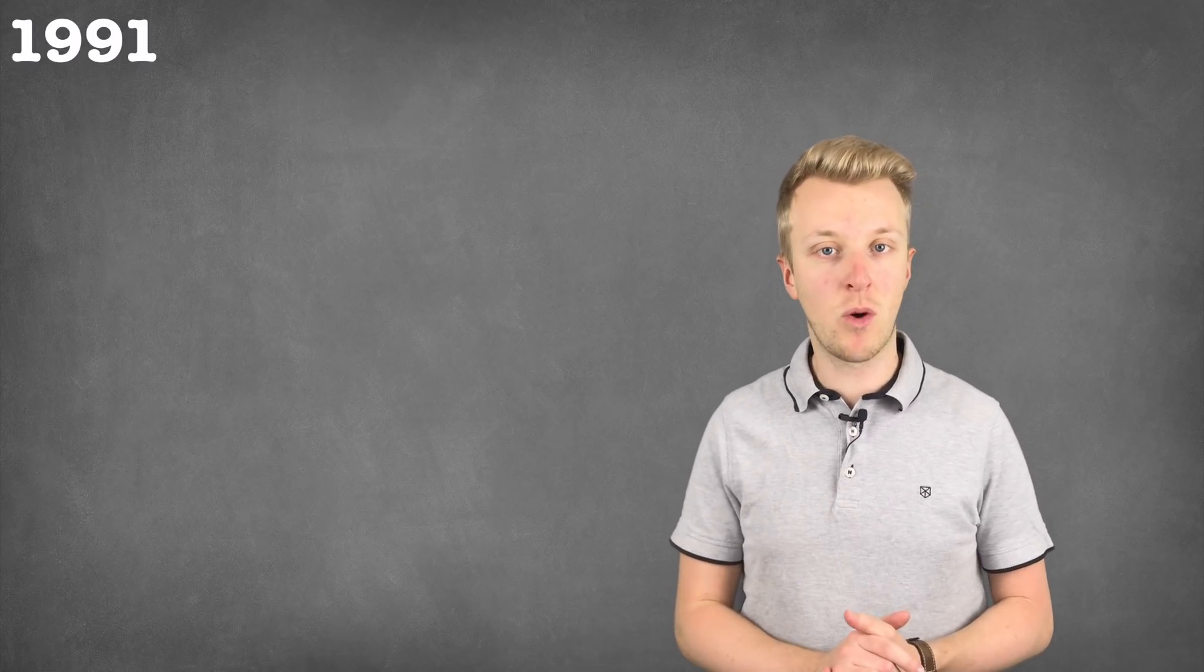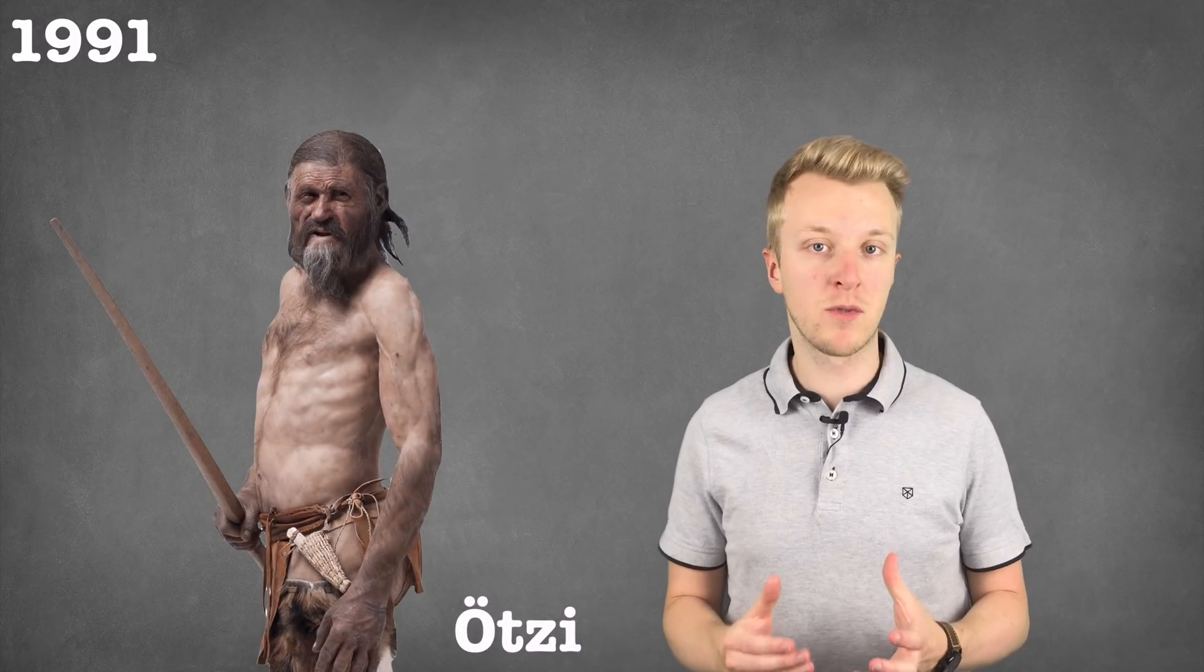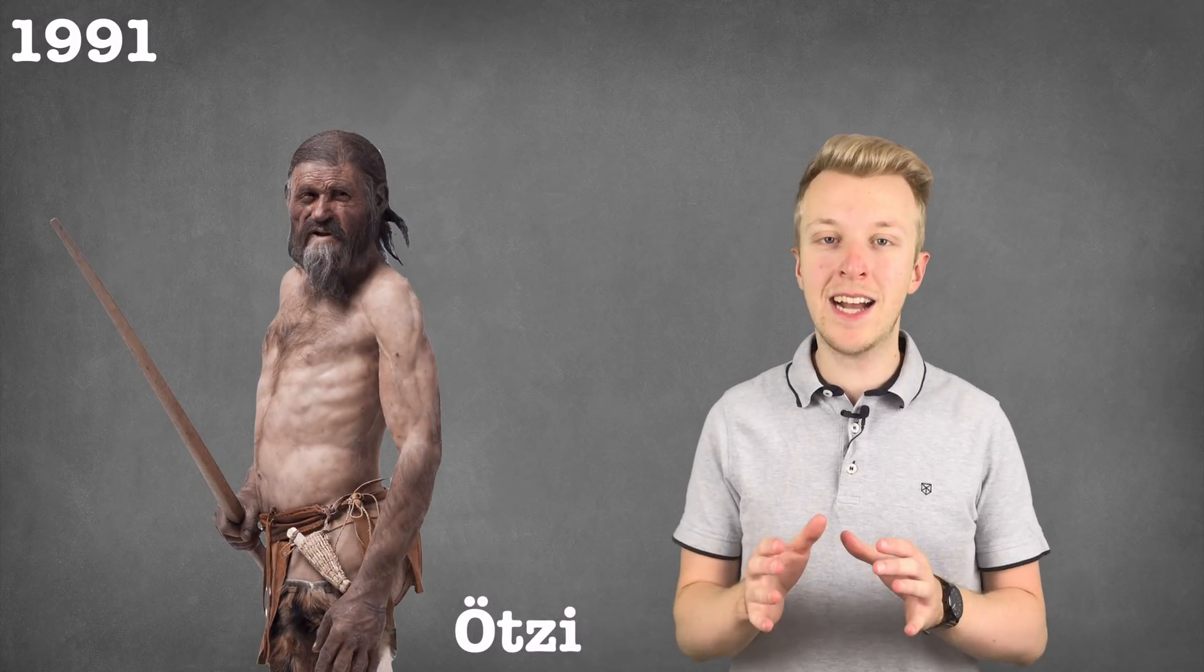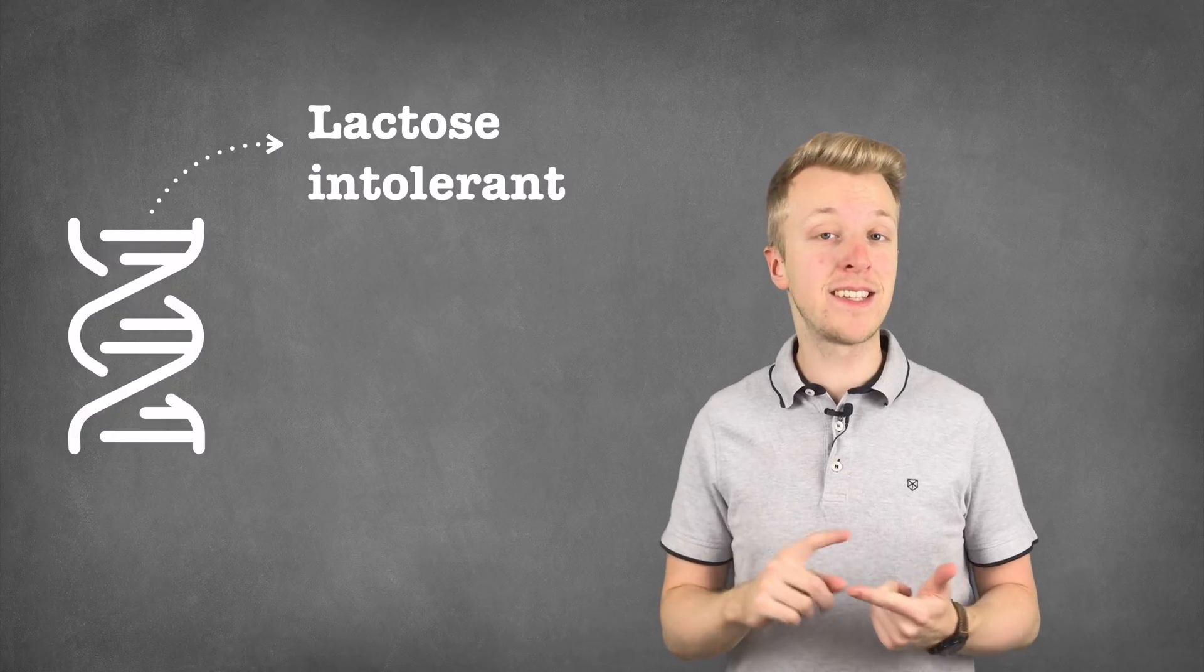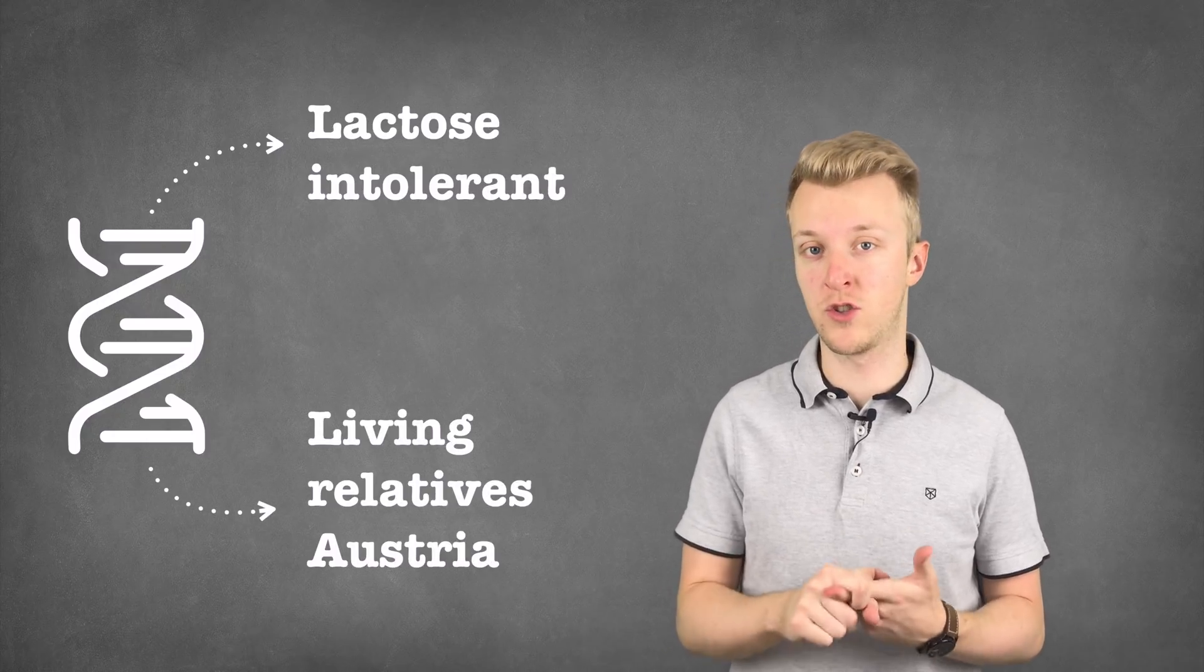DNA, on the other hand, is very robust. In 1991, the mummy of Ötzi the Iceman was found in the Alps. He died over 5,000 years ago and yet we were still able to extract his DNA, read it and find out that he was lactose intolerant and that he still has living relatives in Austria today.